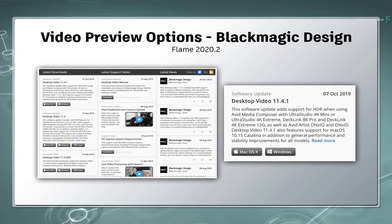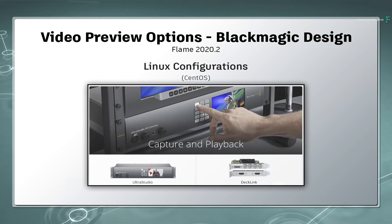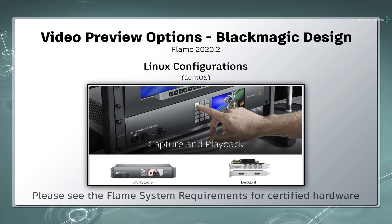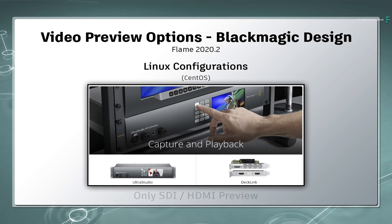Run the installer and proceed to follow the installation instructions. New to Flame on Linux is the support for Blackmagic Design hardware. As of the Flame 2020.2 update, Flame supports a range of UltraStudio and Decklink video cards. Please check out the Flame System Requirements page for the list of certified hardware. This is currently limited to the SDI and HDMI preview cards, and you can use them with both Flame and DaVinci Resolve on your system.